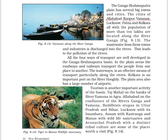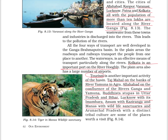The cities of Allahabad, Kanpur, Varanasi, Lucknow, Patna, and Kolkata — all with populations of more than 10 lakhs — are located along the river Ganga. Kolkata is an important port on the river Hooghly. Tourism is also an important activity: the Taj Mahal on the banks of the Yamuna in Agra, Allahabad at the confluence of the Ganga and Yamuna, Buddhist stupas in Uttar Pradesh and Bihar, Lucknow with its Imambara, Assam with Kaziranga and Manas wildlife sanctuaries, and Arunachal Pradesh with its distinct tribal culture are all worth a visit. This concludes Chapter 8 of Class 7 NCERT Geography.